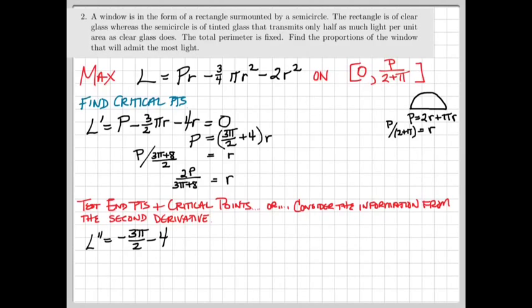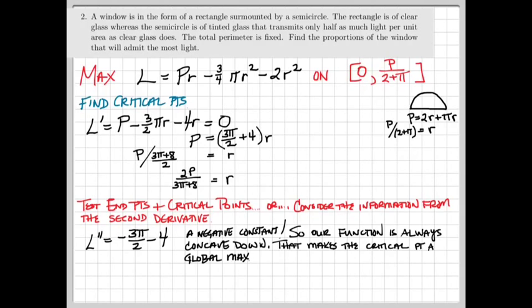So the single critical point we found has to correspond to a maximum. Since the second derivative is always negative, it happens to be constant, our function is concave down. And that makes the single critical point that we found our global maximum.